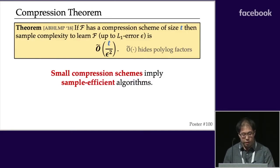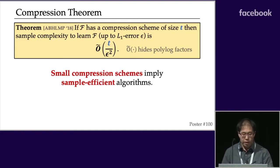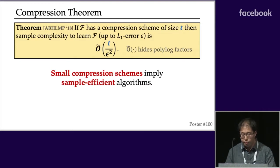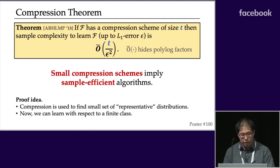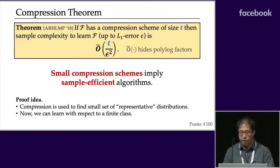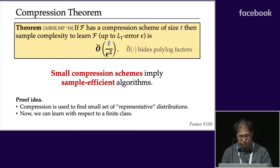One key result in this work is a connection between compression and learnability in density estimation. Specifically, if you have a compression scheme of size T for some class F, there is a black box that takes this compression scheme and outputs an algorithm for learning any density in F up to L1 error epsilon, using only T / ε² samples. The proof idea: a compression scheme lets you find a very small set of representative distributions — think of this as an epsilon net — reducing the problem to learning a finite class, which we know how to do.